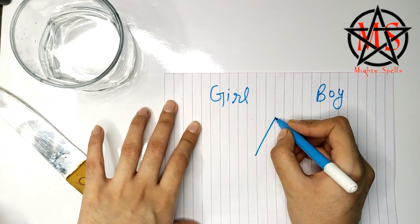And after this what you have to do is you have to tear the paper from in between like this and you have to keep the boy's and the one you want to be separate.